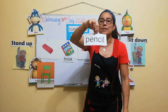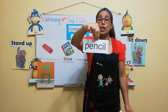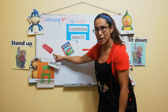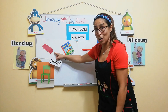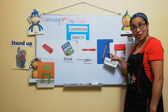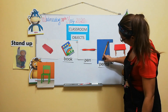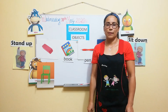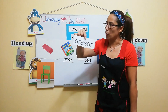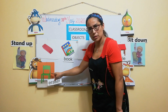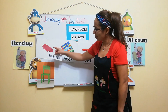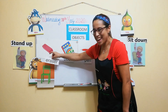The word is pencil. Pencil. Yes. Look. What is a pencil? Here. Is it a pencil? Is it a pencil? No. Is it a pencil? Yes. Okay. Very good. Now, another word is eraser. All right. Eraser. So, where is the eraser? Is it an eraser? No. Is it an eraser? Yes. Yes. Very good.